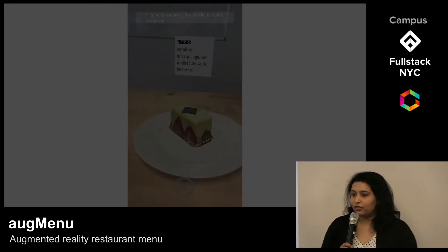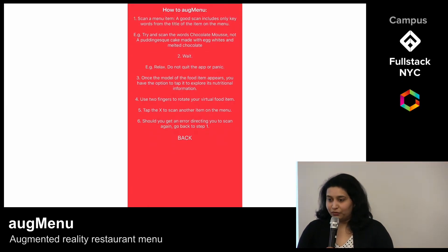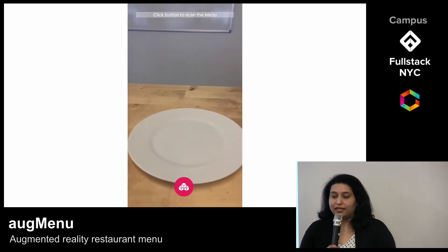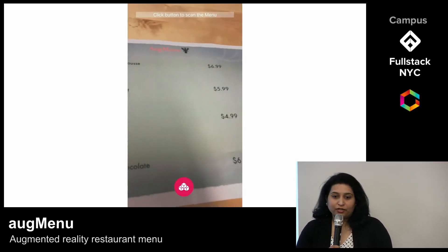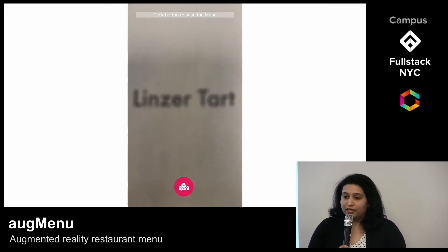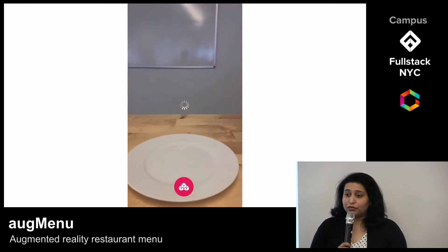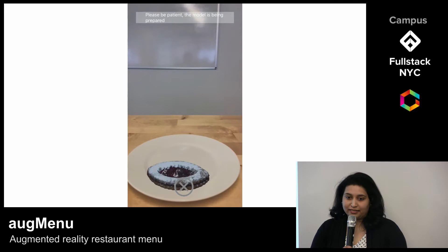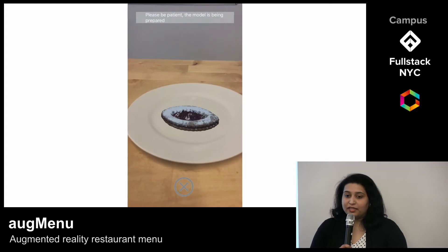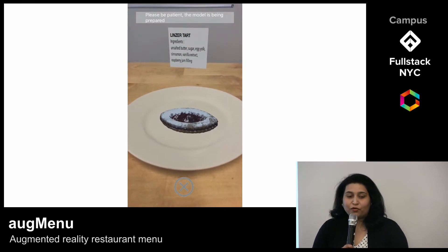As you can see, when you click on the instructions button, it will provide you with the guidelines. Clicking on scan menu will take you to the camera screen. When you focus on the menu item and capture its image, it will render a 3D model of the food item you have selected on your camera screen. When you tap on the model, it will show up its ingredients. You can also rotate the 3D model to see how the food would look from all different angles. If you scan any irrelevant text, it will recognize it and let you know that it's an invalid scan and to please scan again. These are the main features of AugMenu.